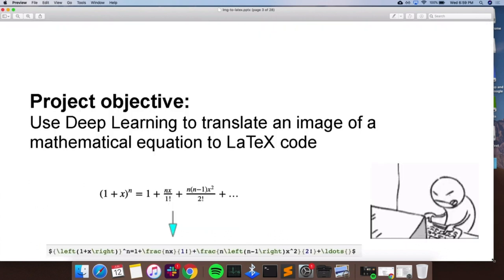And real quickly, what is the objective of our project, which is of course using deep learning to translate an image of a mathematical equation to LaTeX code. And here is an example: this is a picture of a mathematical equation and here is a corresponding LaTeX code.